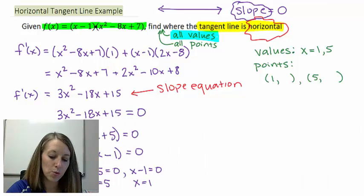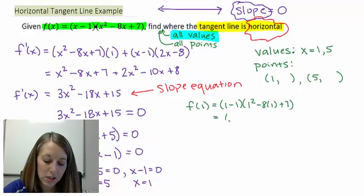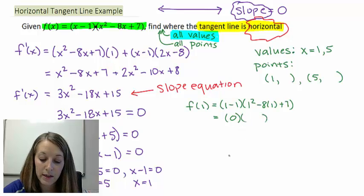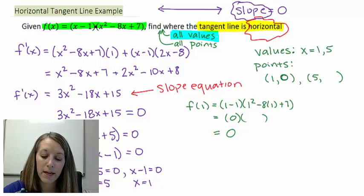So the first one, if I did f of 1, that gives me 1 minus 1, 1 squared minus 8 times 1 plus 7. My first factor comes up to be 0, so quite honestly it doesn't matter what the second factor comes up to be. It's going to simplify to be 0. So that tells me my first point where my tangent line is horizontal is (1, 0).